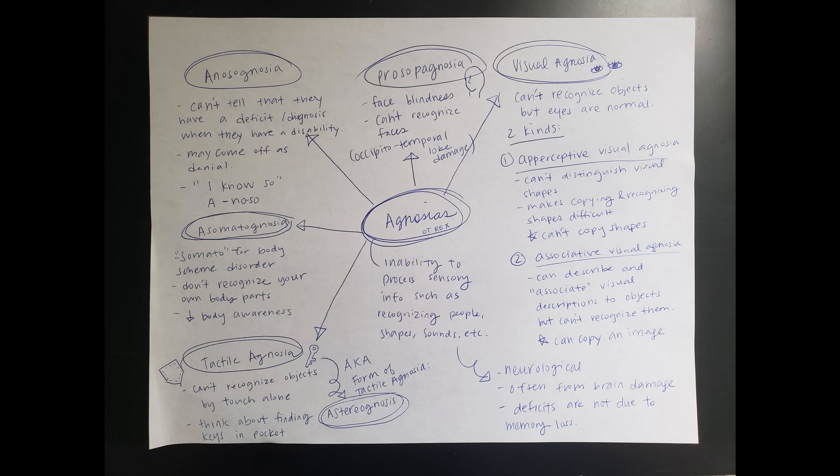There are so many different types of agnosias and this handout isn't going to cover all of them. Let's get started with visual agnosia. As it sounds, visual agnosia means that you can't recognize objects, but your eyes are healthy and normal — it doesn't have to do with your vision. It's neurological.